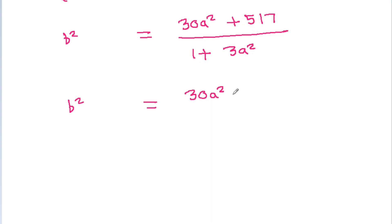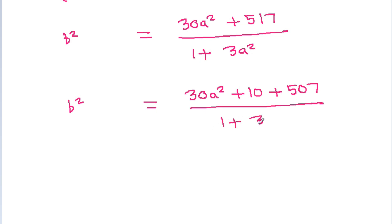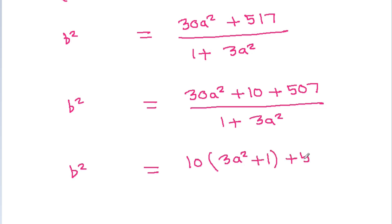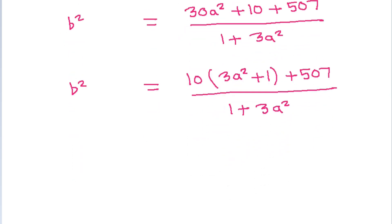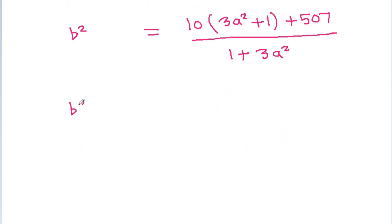And 517 will be equal to 10 plus 507, divided by 1 plus 3a squared. So b squared will be equal to 10 times 3a squared plus 1, divided by 1 plus 3a squared, plus 507 divided by 1 plus 3a squared.